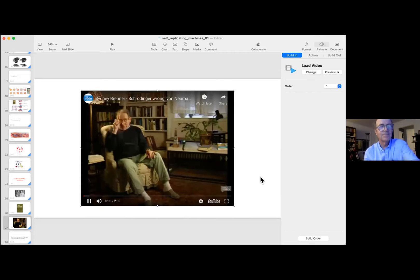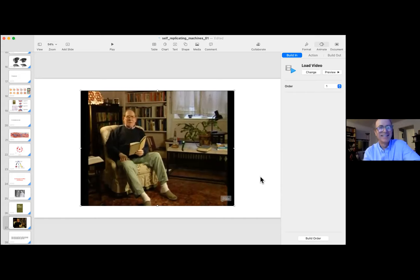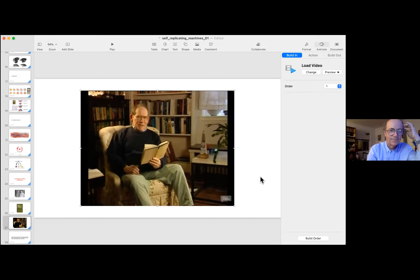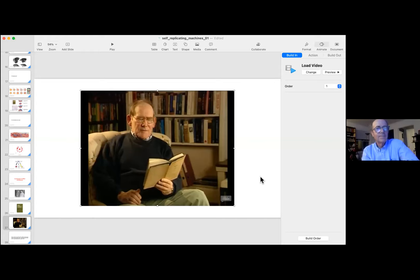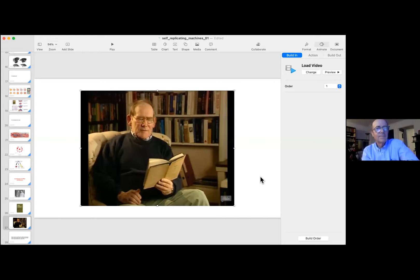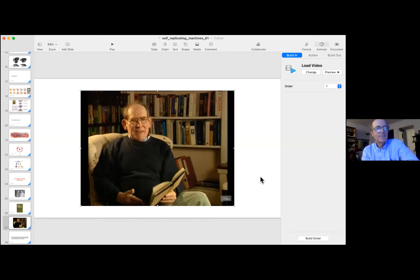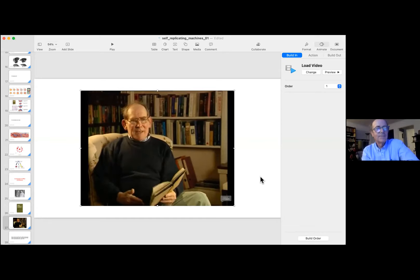I think he made a fundamental error, speaking of Schrodinger. A fundamental error can be seen in his idea of what the chromosome contained. He says, in describing what he calls the code script, he says, the chromosome structures are at the same time instrumental in bringing about the development they foreshadow. They are law, code, and executive power. Or to use another simile, they are the architect's plan and the builder's craft in one. And in our modern parlance, we would say they not only contain the program, but the means to execute the program. And that is wrong because they don't contain the means. They only contain a description of the means to execute it.